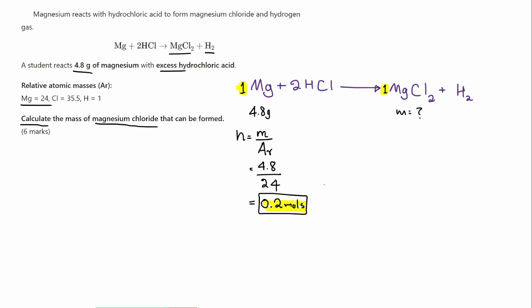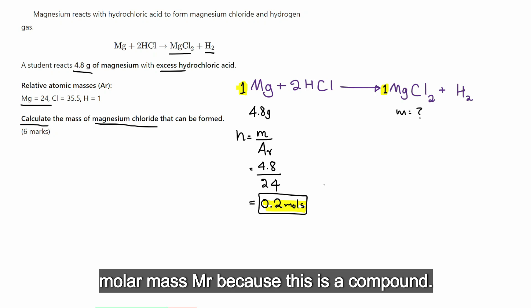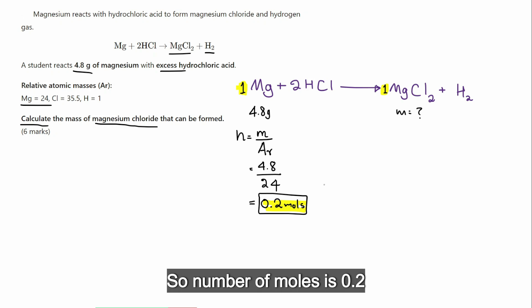Now, number of moles is mass over molar mass, Mr, because this is a compound. So, number of moles is 0.2, mass I don't know, M. Mr is the molar mass. Now, let's find that.